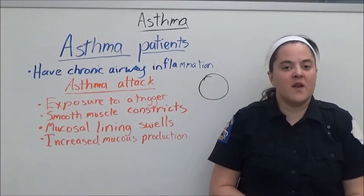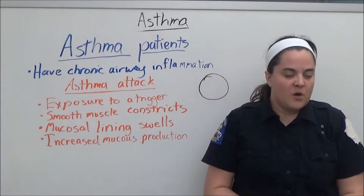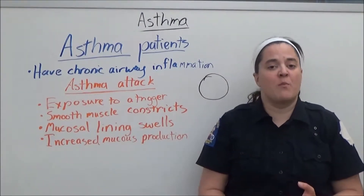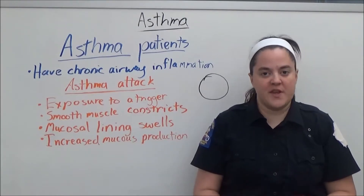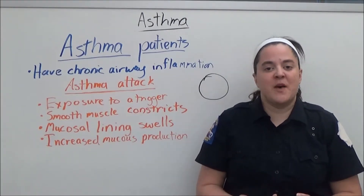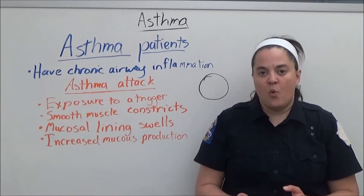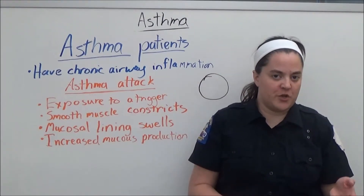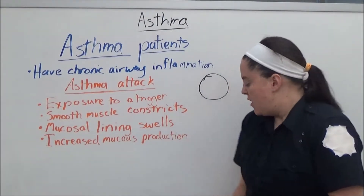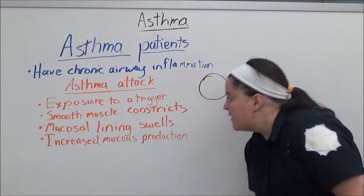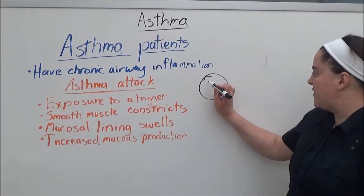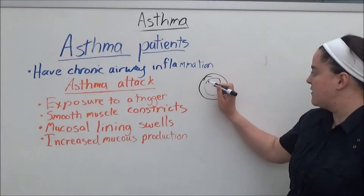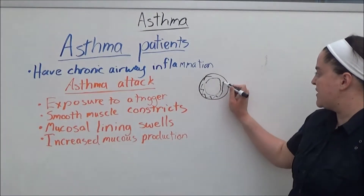Asthmatics have chronically inflamed airways, which means that their airways are more responsive to inhaled particulate. An asthma attack occurs when the airway is exposed to one of the aforementioned triggers. When exposure occurs, smooth muscle in the airway constricts, which narrows the passage.